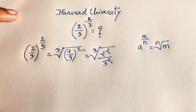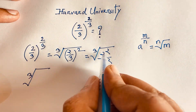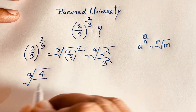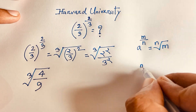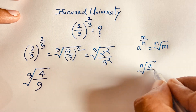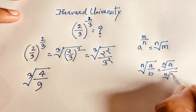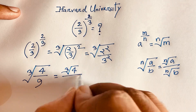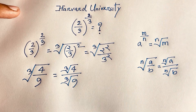Now we have cube root of 2 squared over cube root of 3 squared, which is cube root of 4 over cube root of 9. Using the law: n-th root of (a/b) equals n-th root of a over n-th root of b.